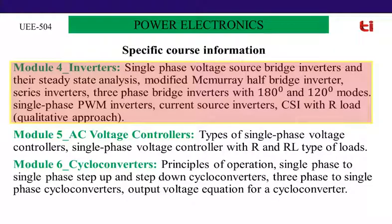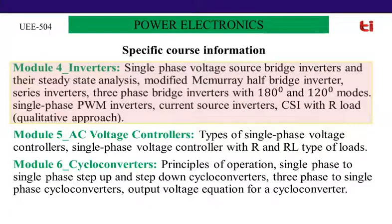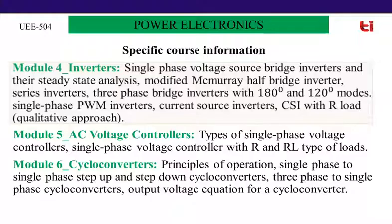Inverters are used to convert DC to AC. In Module 4, we will discuss single phase voltage source bridge inverters and their steady state analysis, modified McMurray half bridge inverter, series inverters, three phase half bridge inverters with 180-degree and 120-degree conduction modes, single phase pulse width modulated inverters, and current source inverters with R load. A qualitative approach will be covered here.